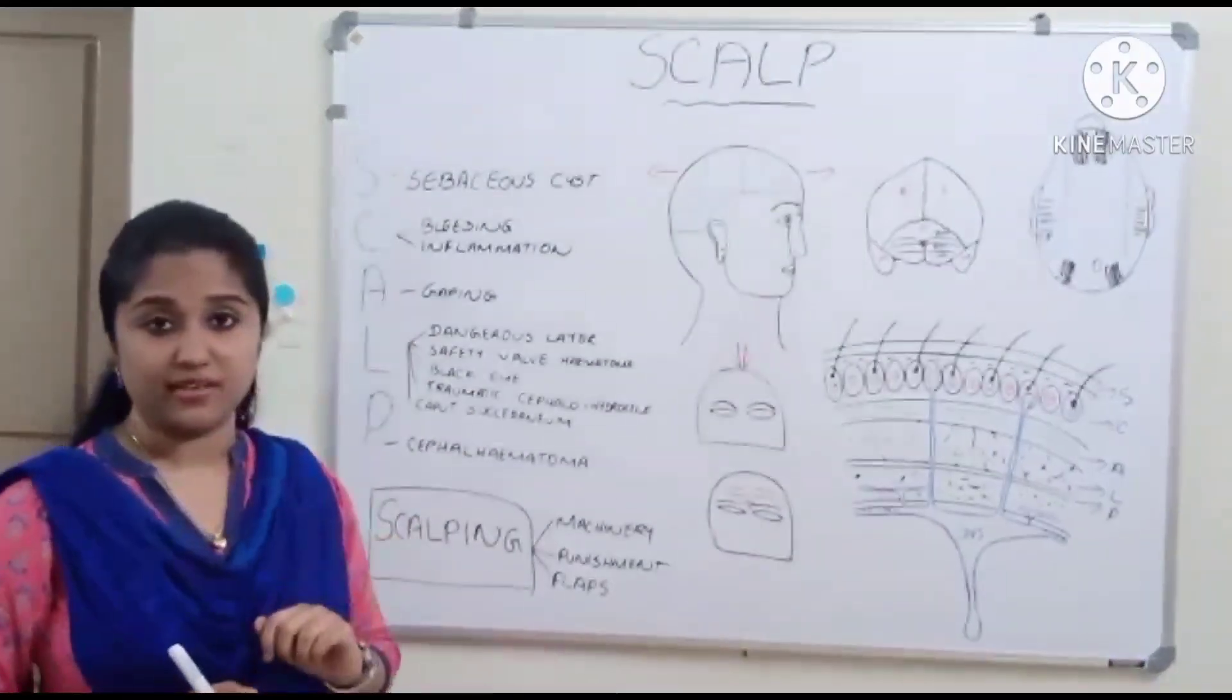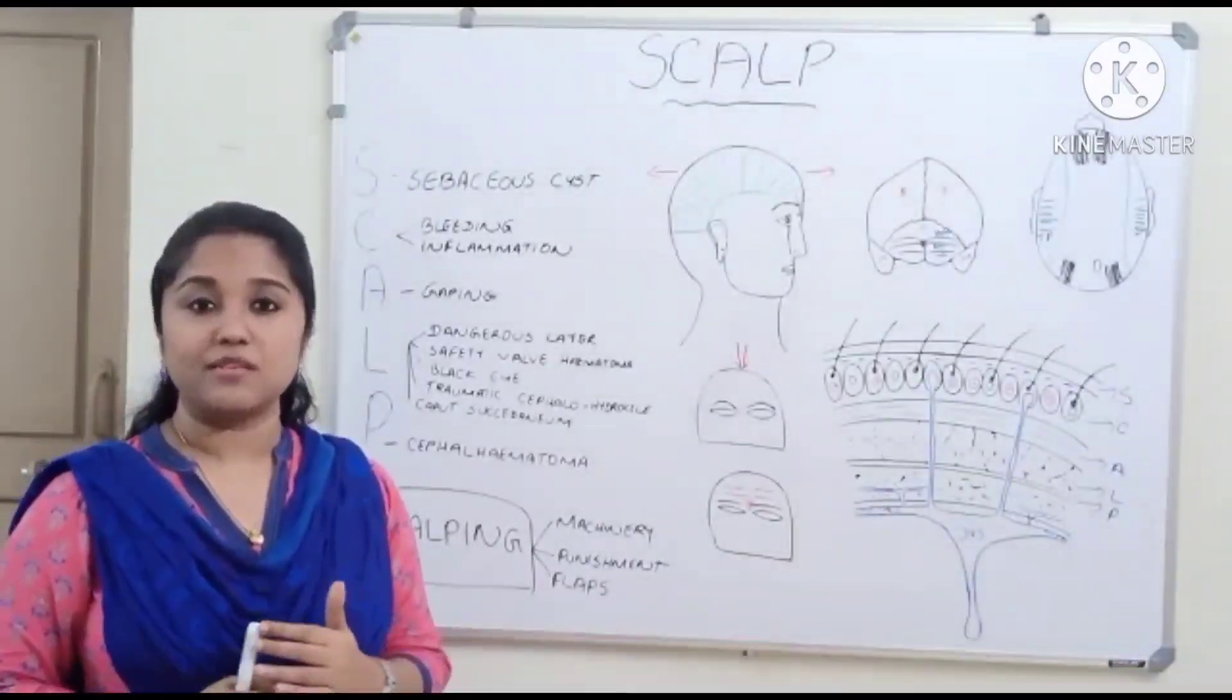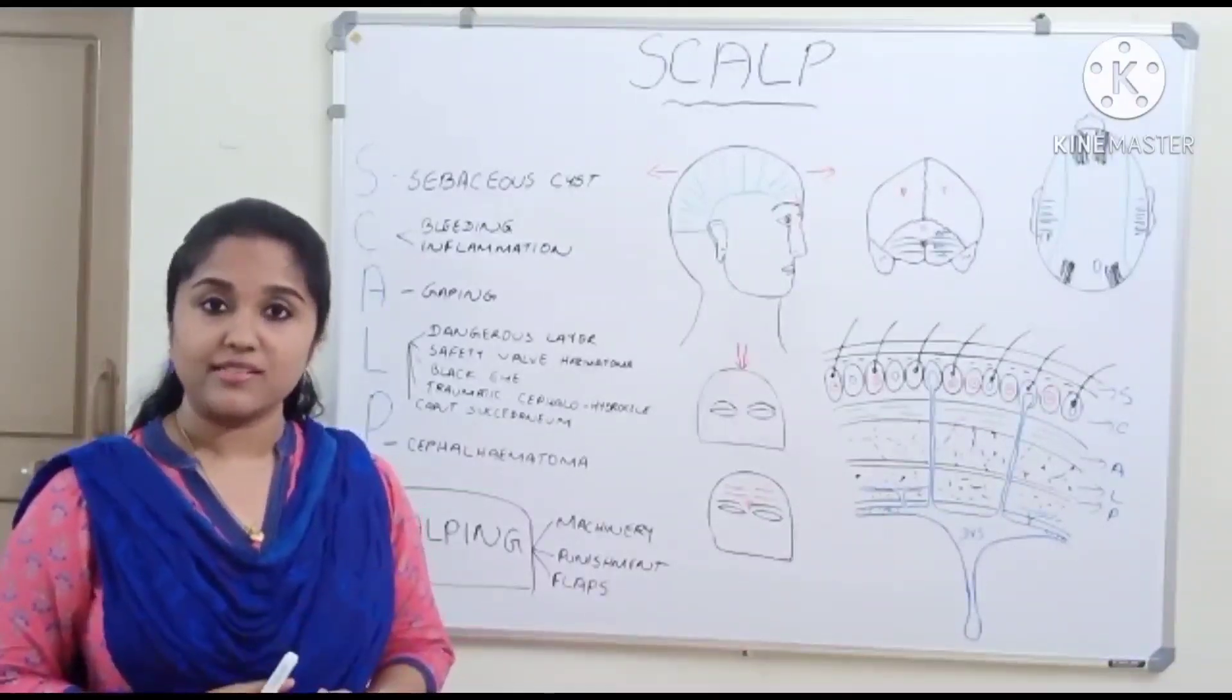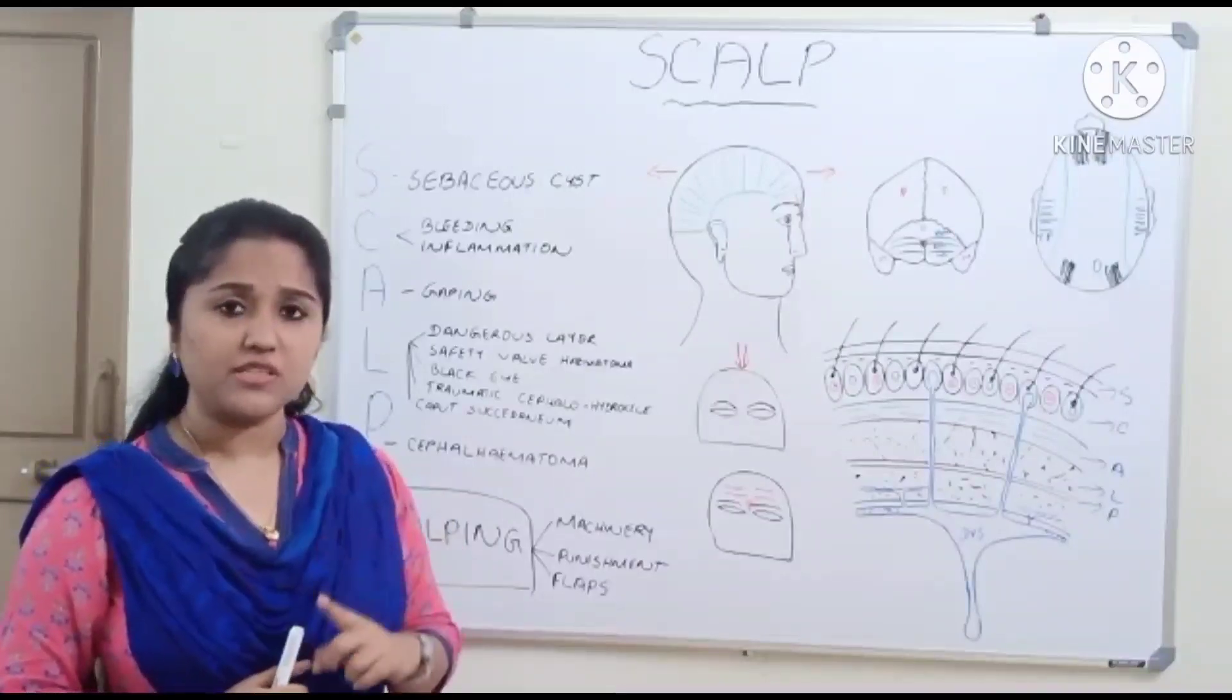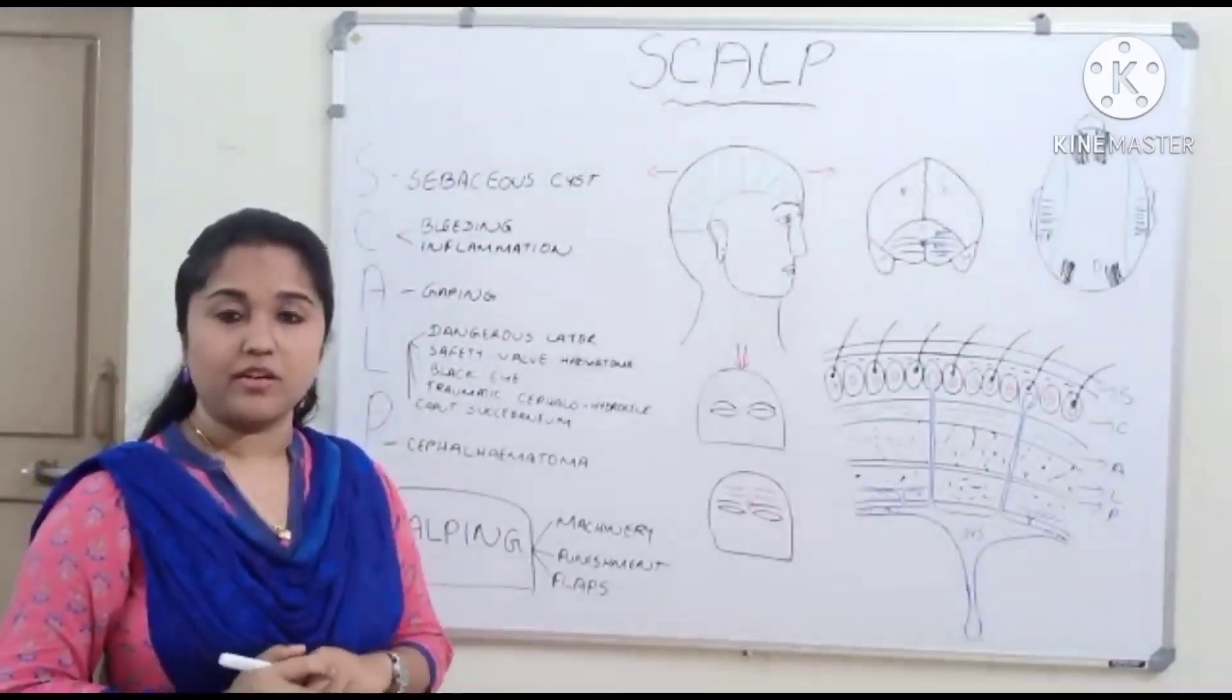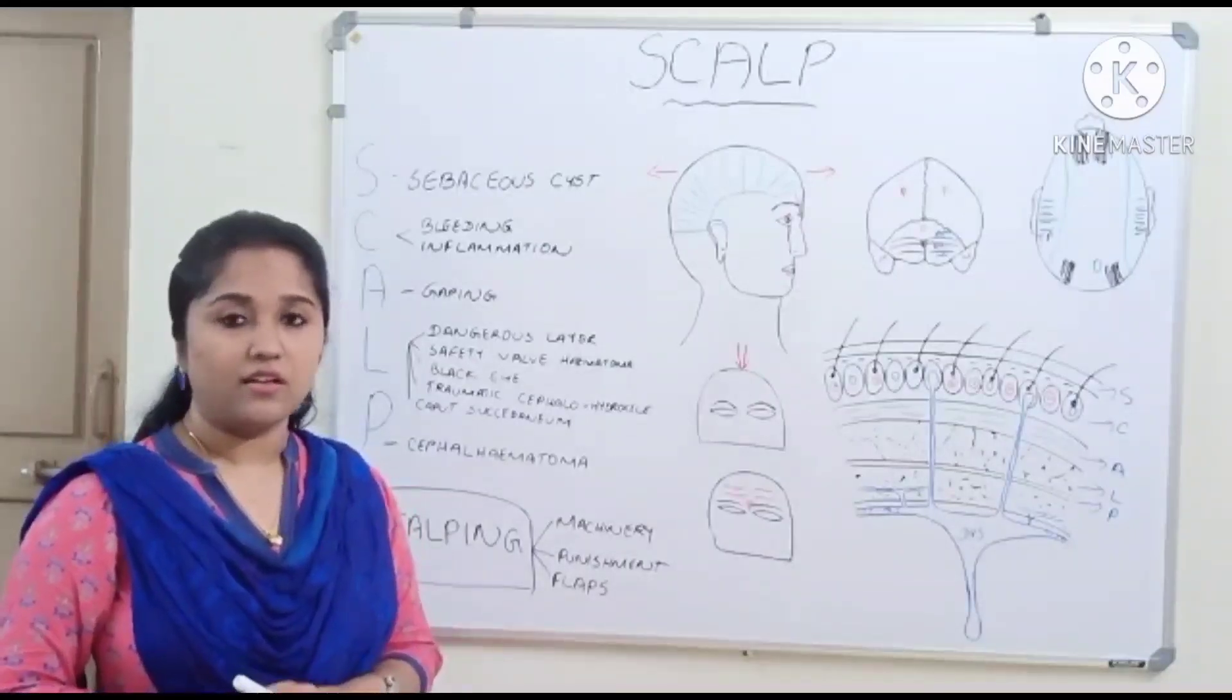The first layer is skin. SCALP skin is very thick and consists of numerous hairs, sweat glands, and sebaceous glands. The first applied aspect is sebaceous cysts, which are more common in the first layer.